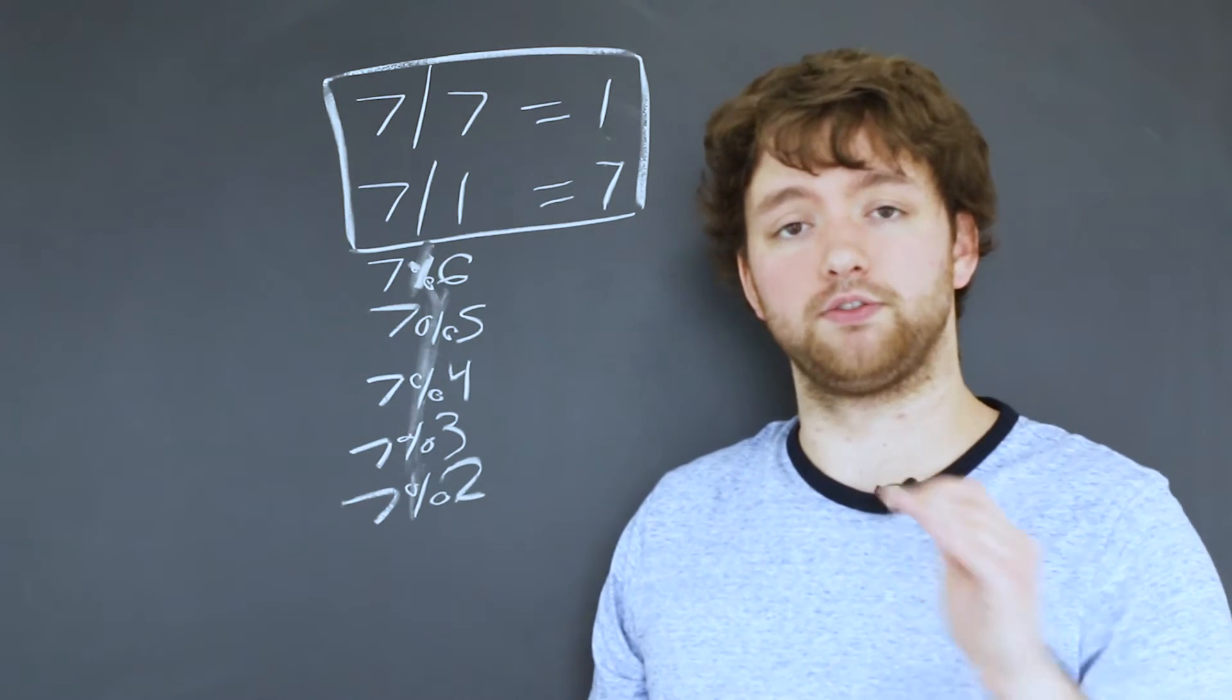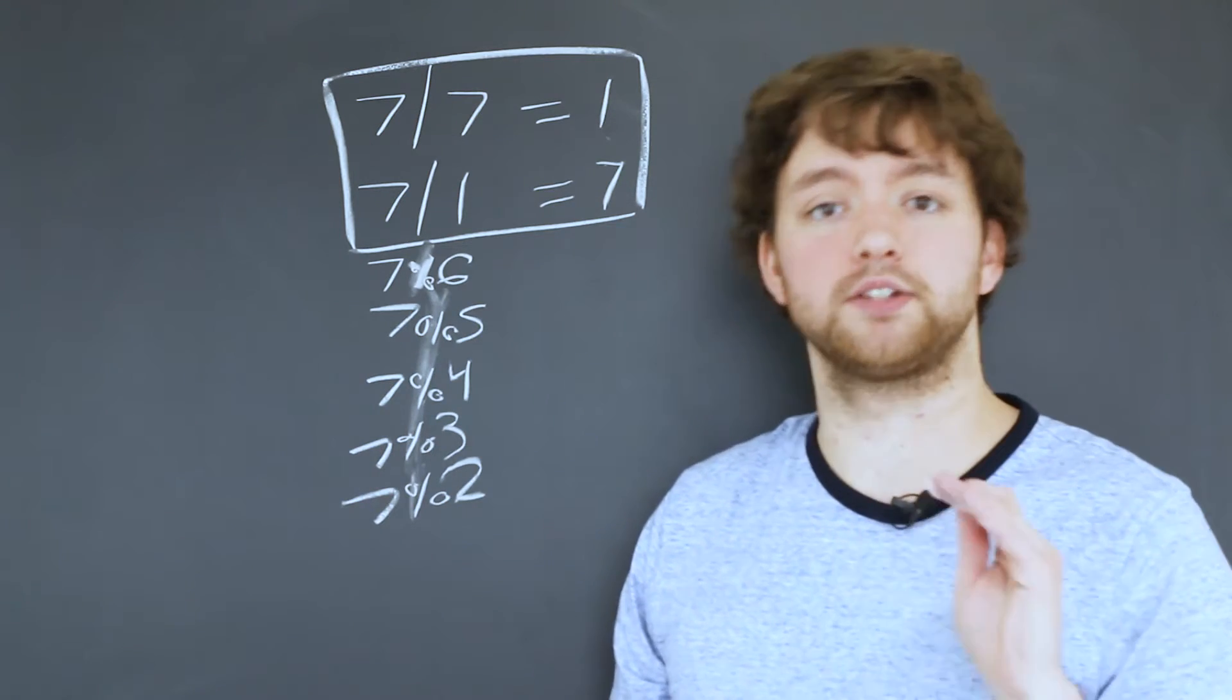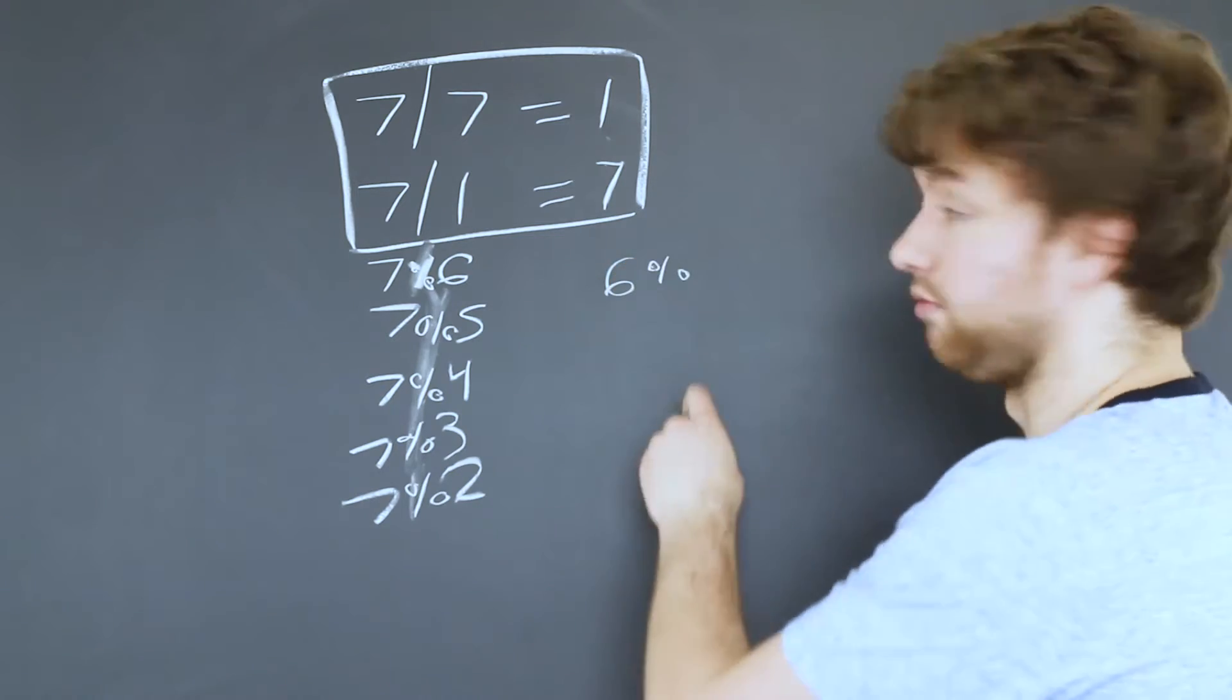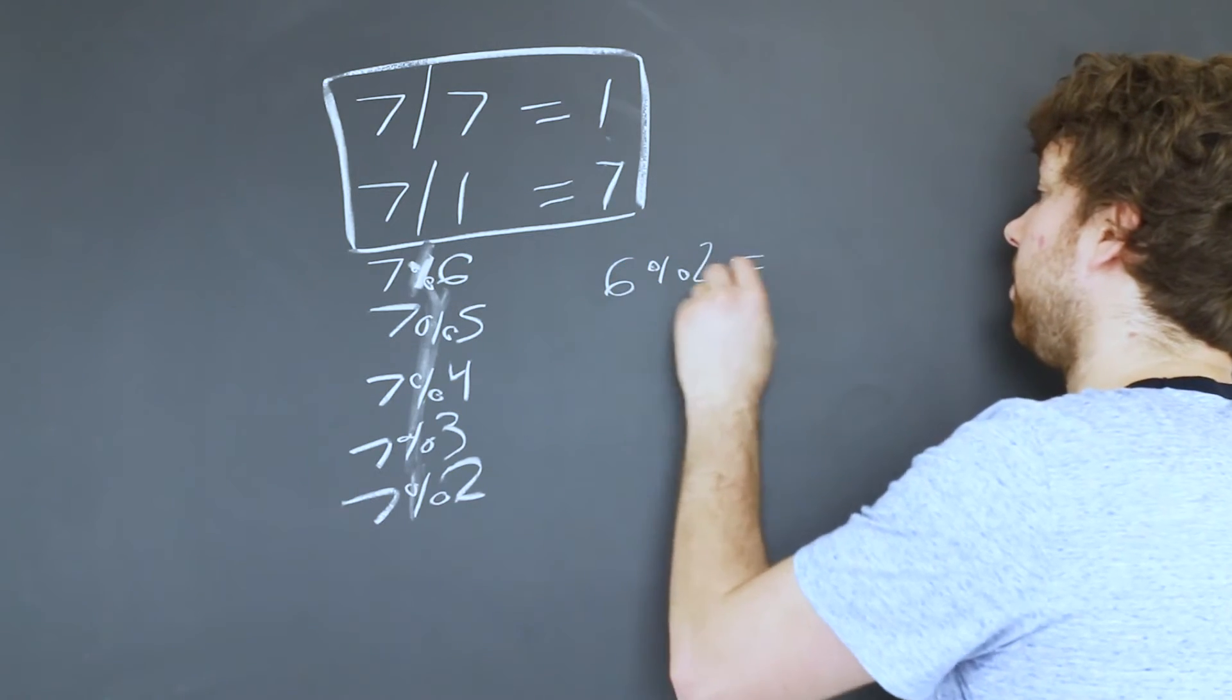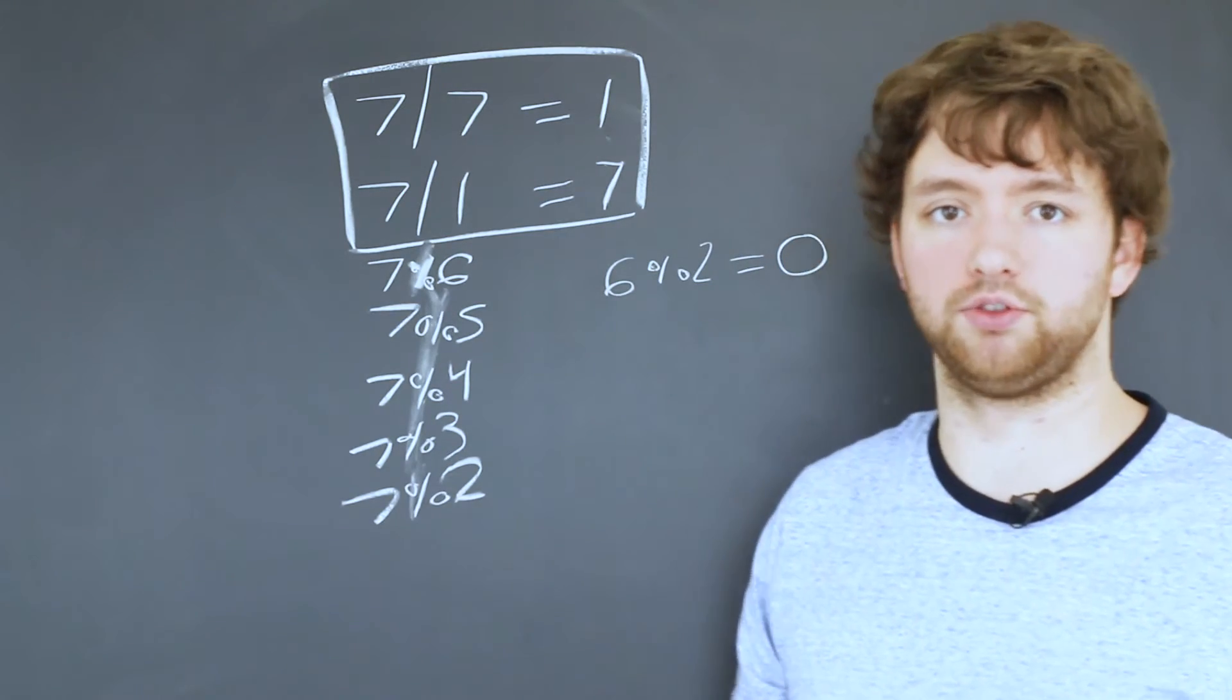If the remainder for any of those is zero, then the number is not prime. For example, six, which is not prime—the remainder with two is zero because you can divide six by two to get three. No remainder.